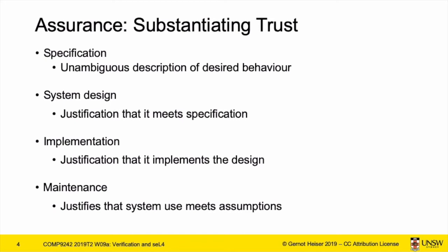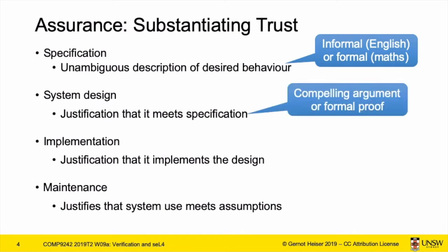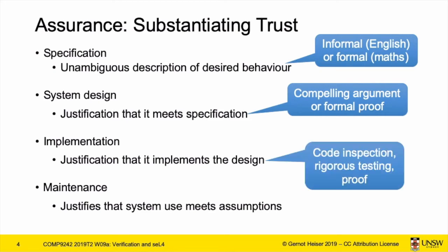What assurance looks at is various stages of the system lifecycle. Specification: is the system's functionality clearly defined? Traditionally this is informal — all in English — and increasingly it's formal, meaning some sort of mathematics. Then the design: do we have an overall design that justifies claiming it somehow satisfies the specification? Again, this can be done formally or informally. Then the implementation: does the implementation actually match what the design says? Informal techniques include code inspection and testing; formal techniques include mathematical proofs.